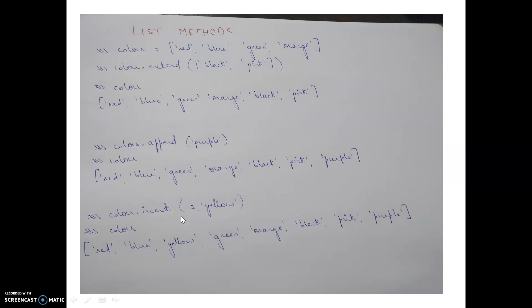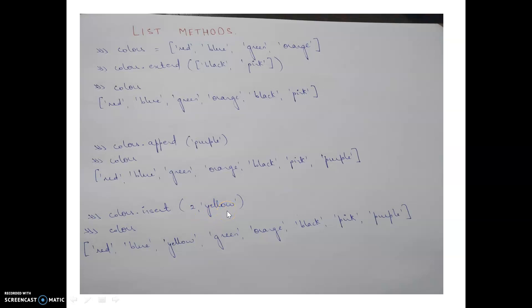When you want to insert an element at a particular position — rather than just appending to the end — you use the insert() method. The syntax is: list_name.insert(index, element), where index is the position where you want to insert. For example, inserting 'yellow' at index 2 places it at position 2 (zero-indexed: 0, 1, 2), and the remaining elements are pushed forward.